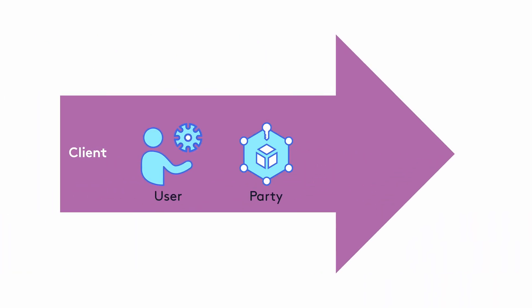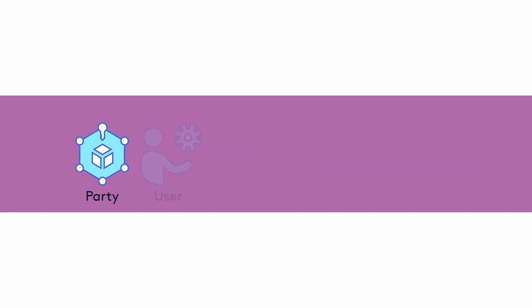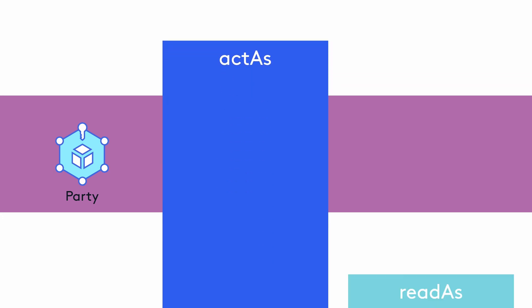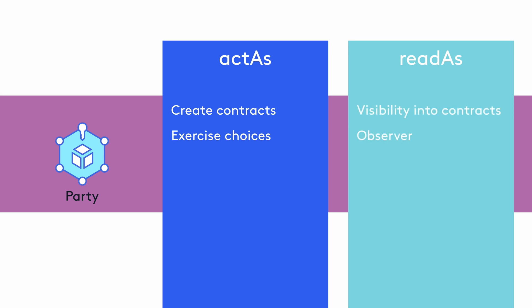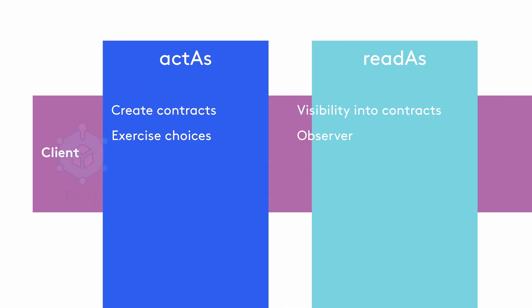The client application maps users to parties in two capacities: act as and read as. The act as clause enables users to do what a party has been authorized to do — for example, create contracts and exercise choices. The read as clause enables them to have visibility into their contracts as observers. This is an important concept as it highlights how DAML manages authorization and privacy. Authorization is about who can do what, enabled by the act as clause. And privacy is about who can see what, enabled by the read as clause.